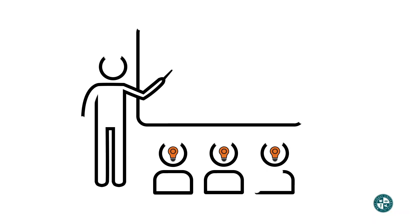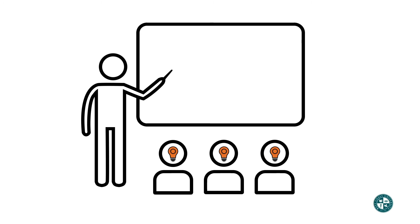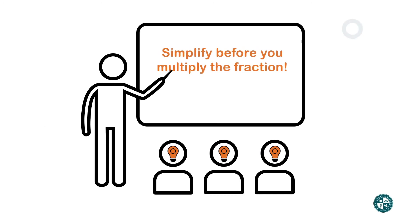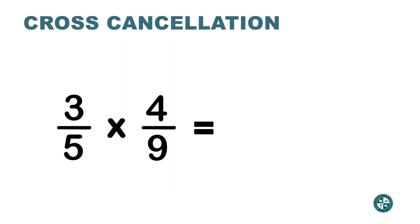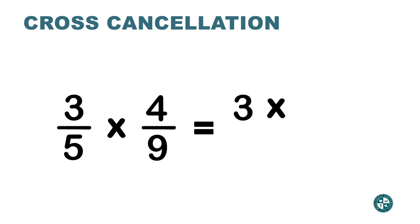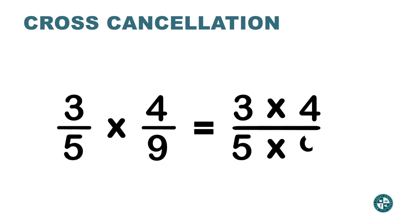There's a technique from elementary school where you can simplify before you multiply the fraction, and that technique is called cross cancellation. So let's say you're multiplying 3 over 5 times 4 over 9. How do we multiply fractions? Top with top — so 3 times 4 — and bottom with bottom — 5 times 9.